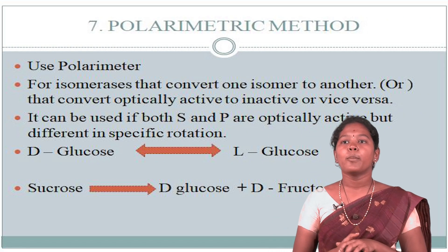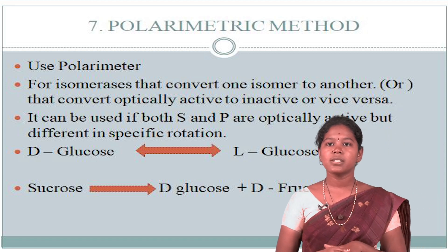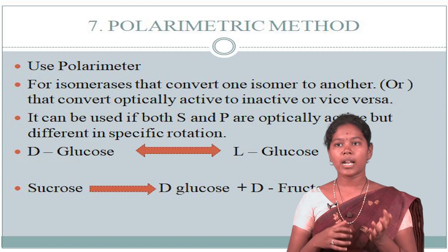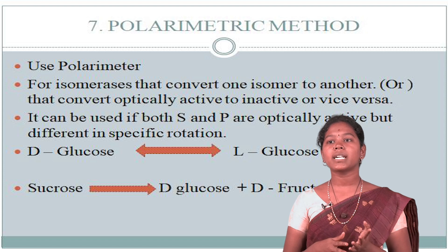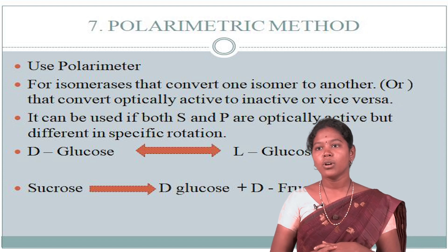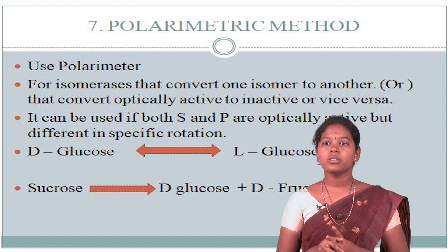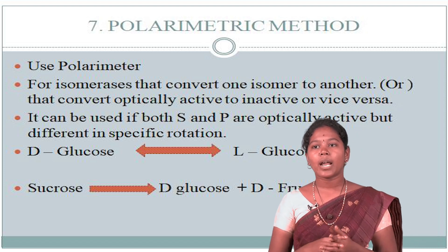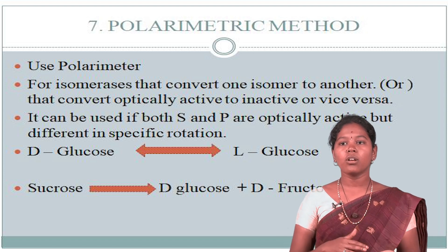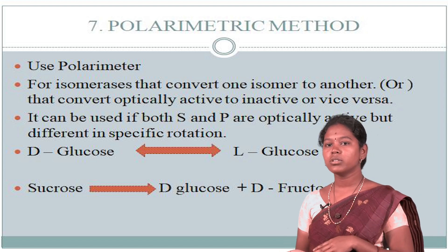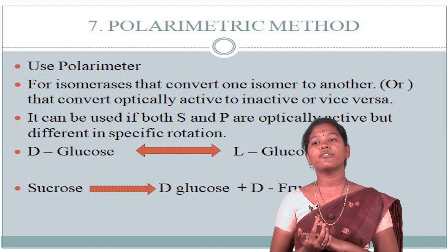The seventh method is the polarimetric method. This uses a polarimeter for isomers that convert one isomer to another — converting optically active compounds to inactive ones, or vice versa. It can be used if both substrate and product are optically active but differ in specific rotation. Examples: D-glucose converted to L-glucose; sucrose converted to D-glucose plus D-fructose.